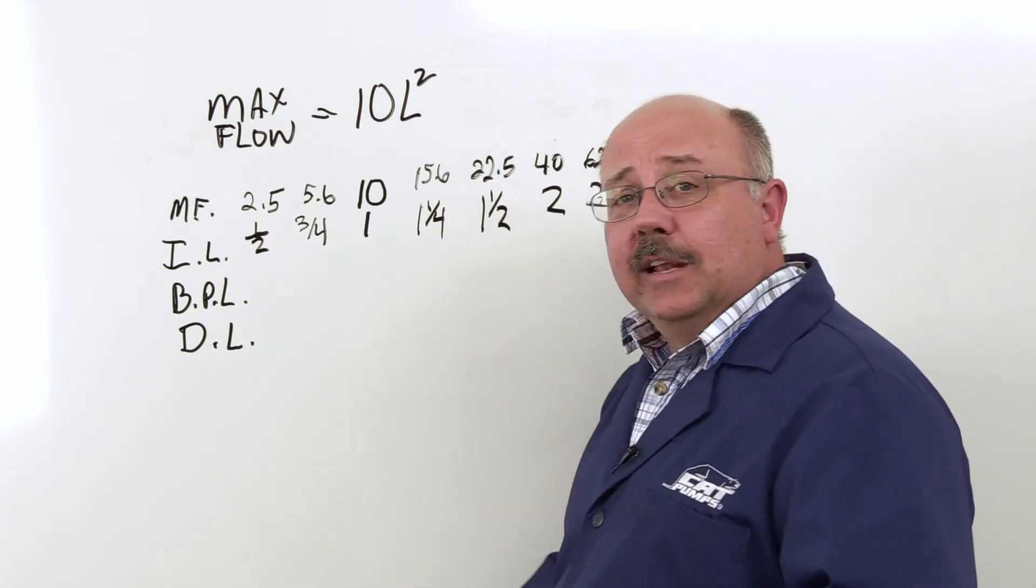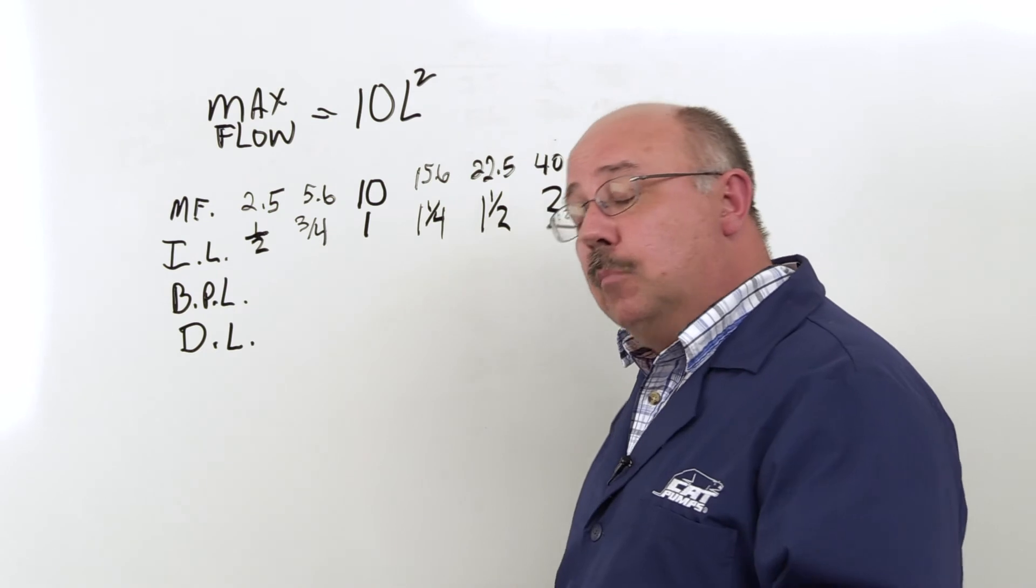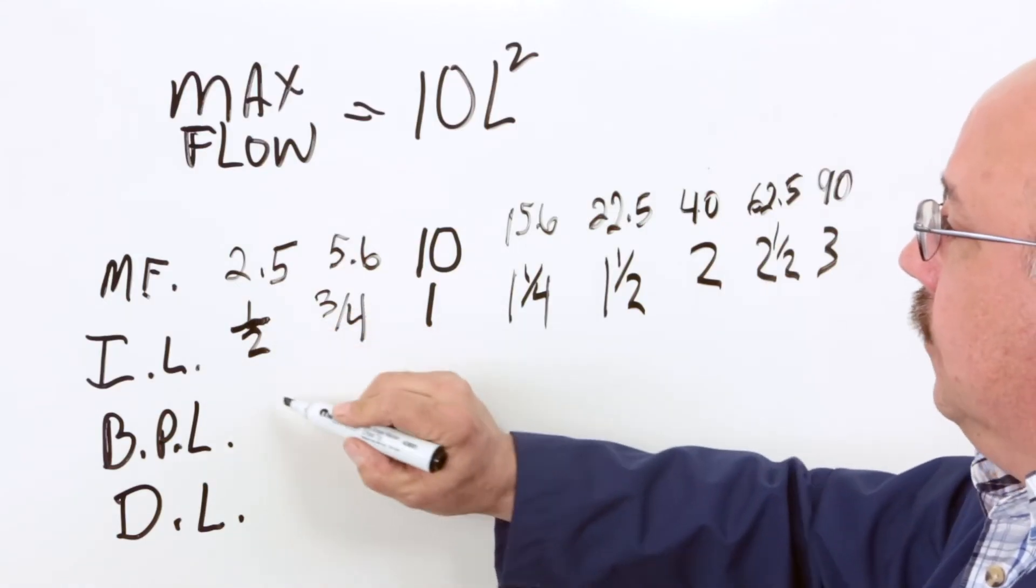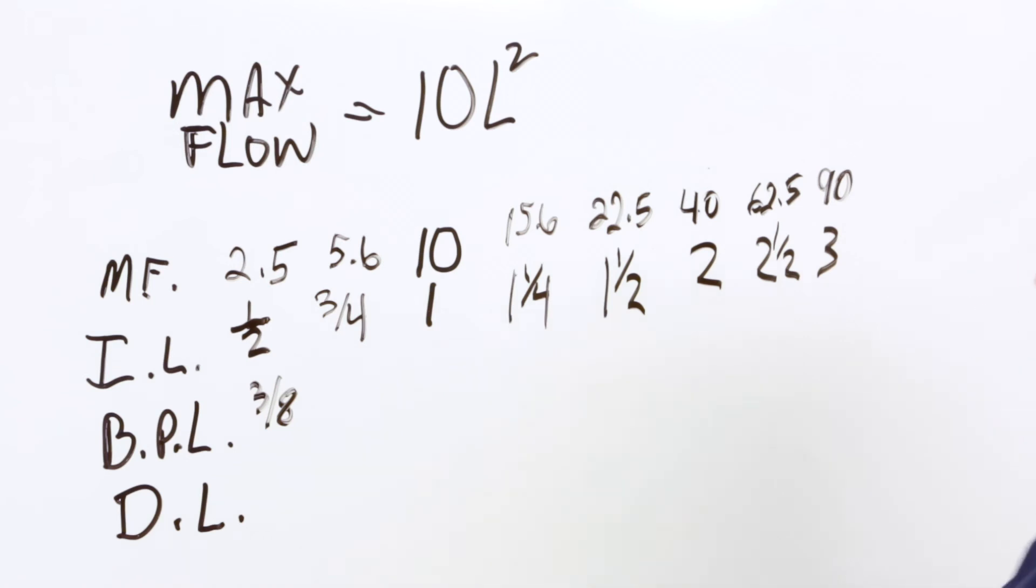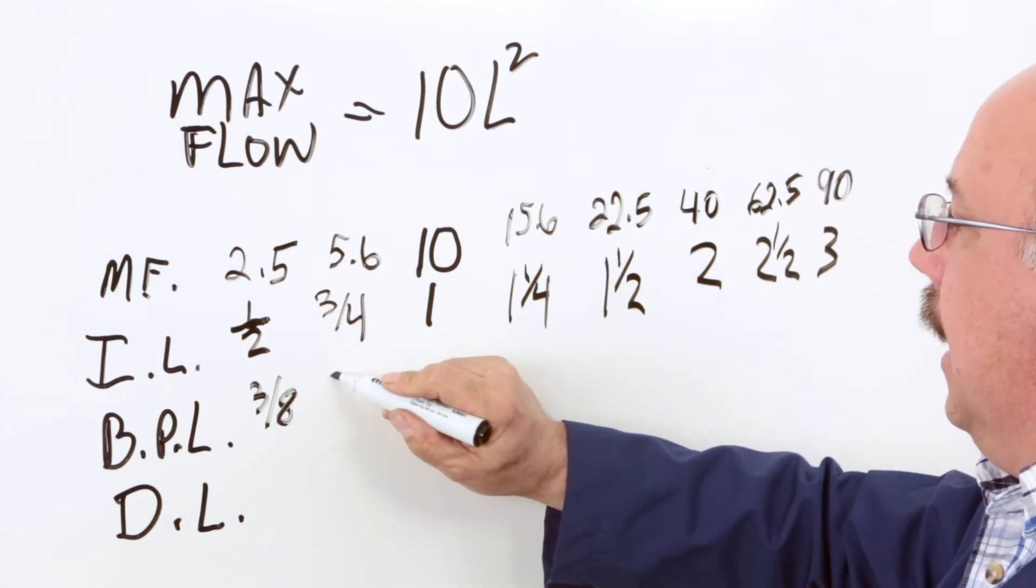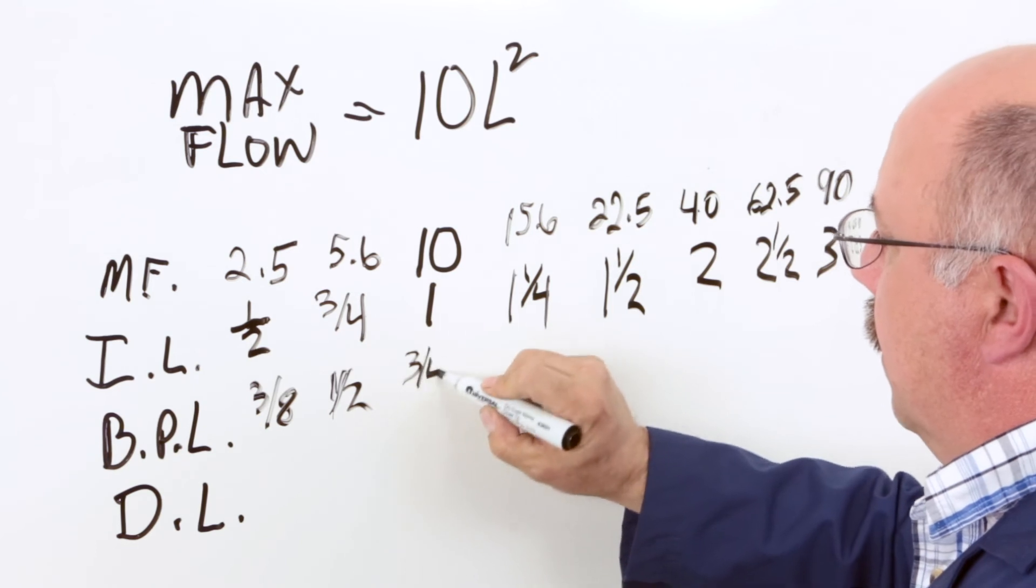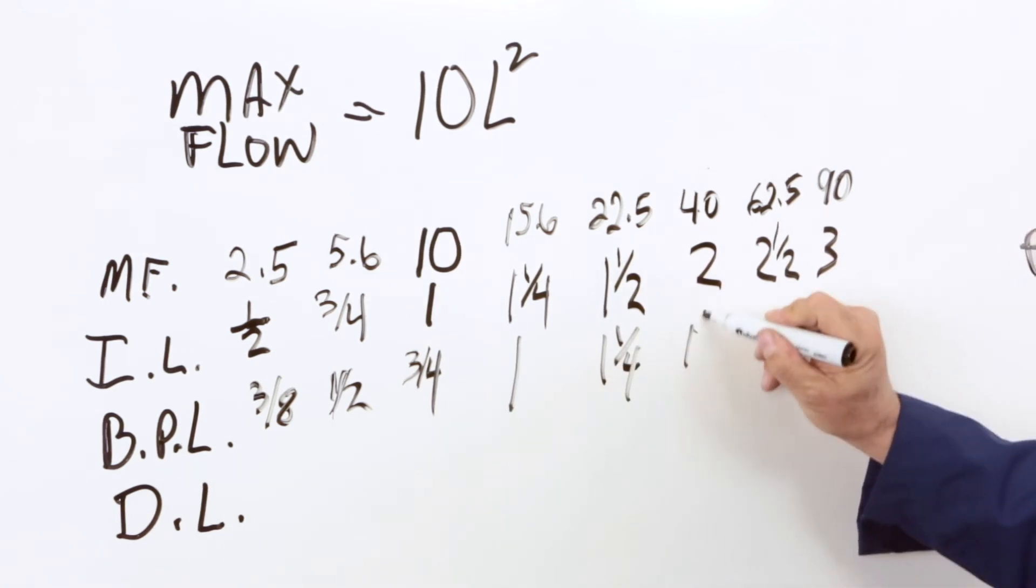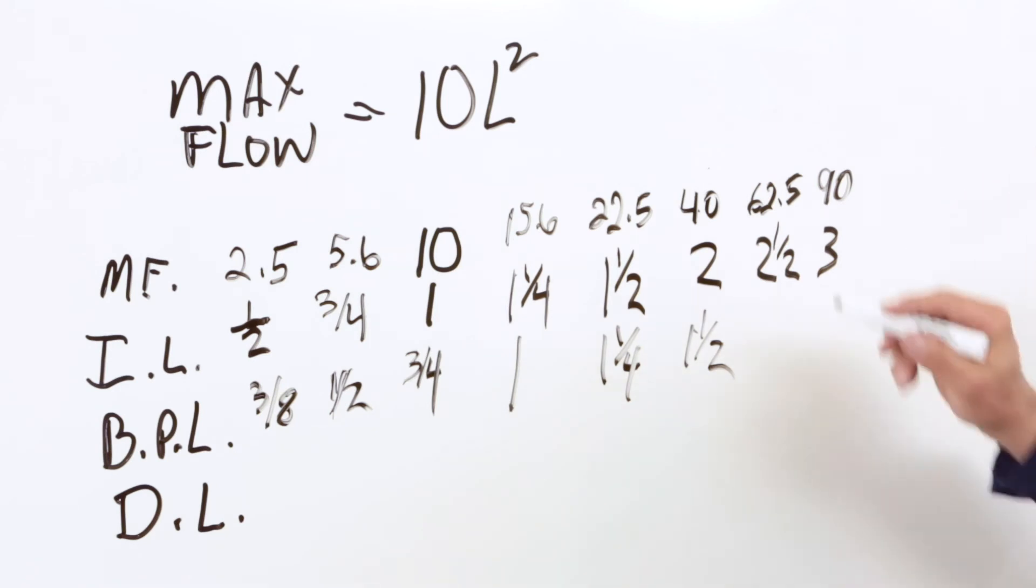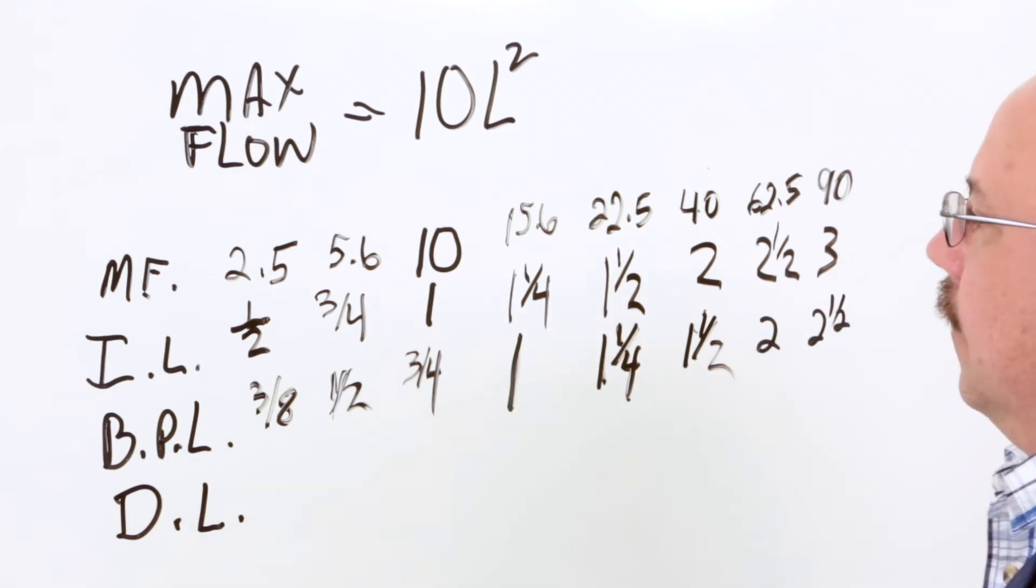Now we're going to look at the bypass line. The bypass can handle more velocity. And so a guideline is to use a bypass line that's one size smaller than your inlet line. So this half-inch inlet line, we would use a 3-eighths inch bypass line. And we can just carry this all the way through. So 3-quarter would be half. A 1-inch line would give us a 3-quarter. The inch and a quarter would give us a 1. Inch and a half, inch and a quarter. Inch and a half. And the 2 would give us a 2. And the 3 would give us 2-and-a-half.